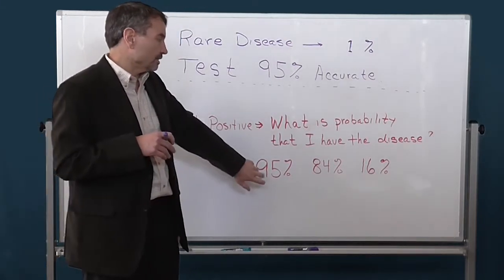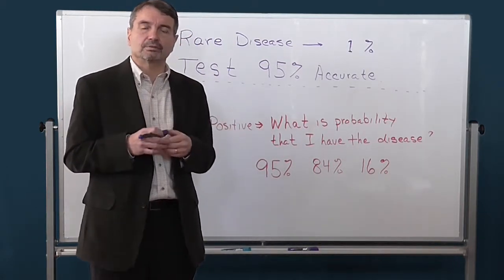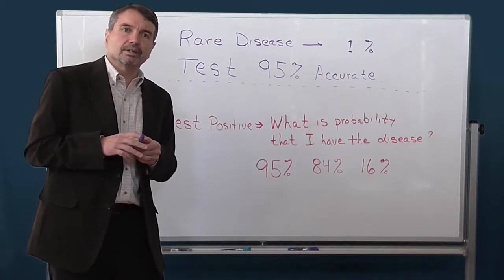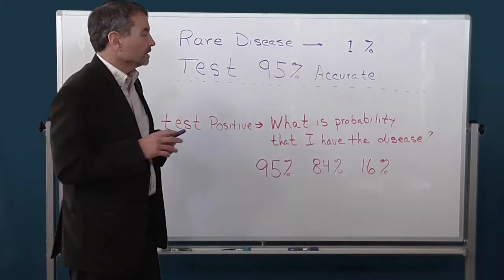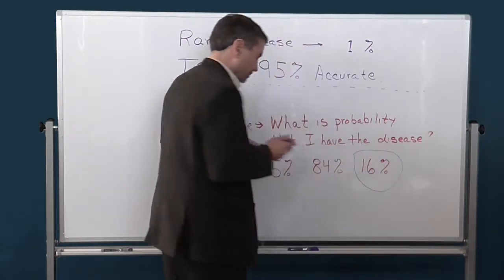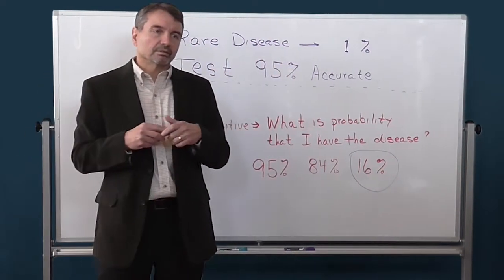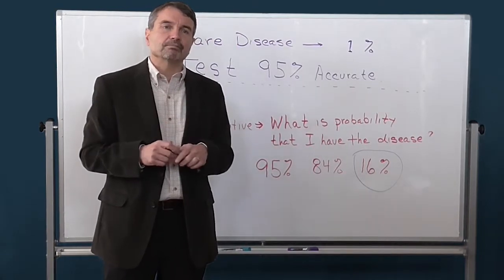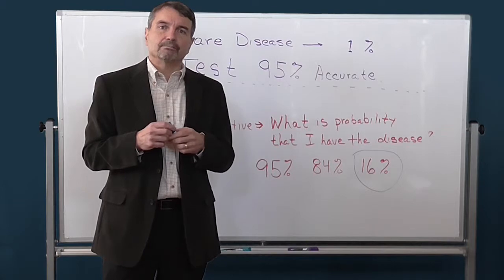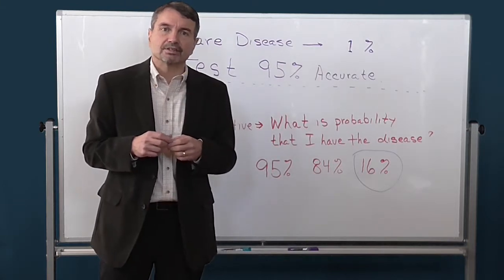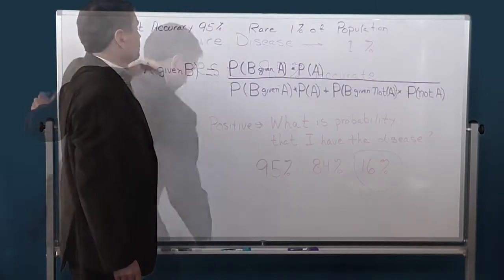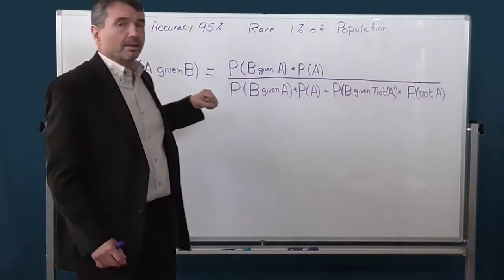More than half of the doctors answered 95%, which is actually incorrect. Only 11 of them had it correct, and the correct answer is actually 16%. It's kind of illogical — it doesn't quite follow what you would think. But let's go through the mathematics of Bayes' theorem and see why it turns out to be 16%.